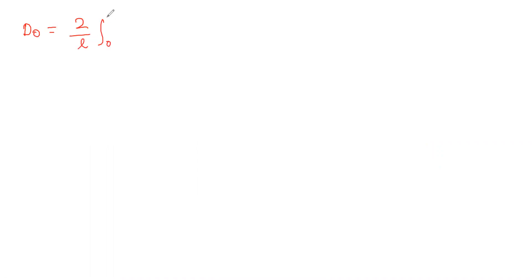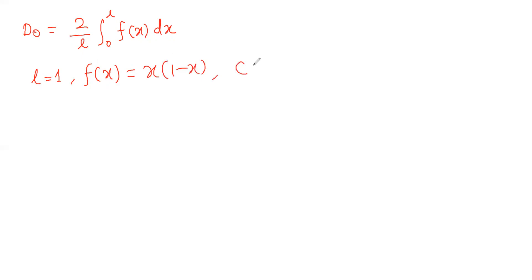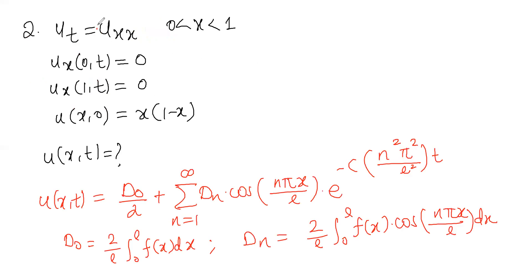First we will find d0. But before that, let me identify l and f(x). Whenever you get a problem, always first find your c, your l, and f(x). In this case l equals 1, f(x) is given as x times (1 minus x), and c is also 1. So we have l equal to 1 and f(x) equal to x(1 minus x).